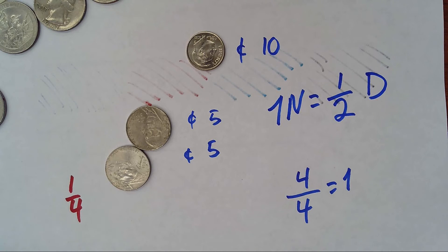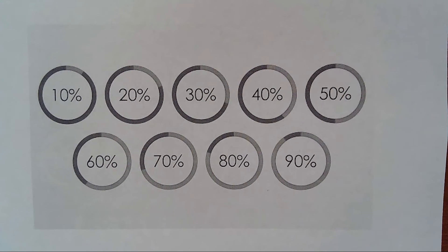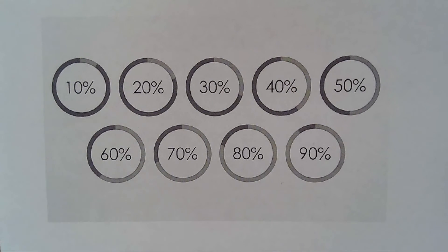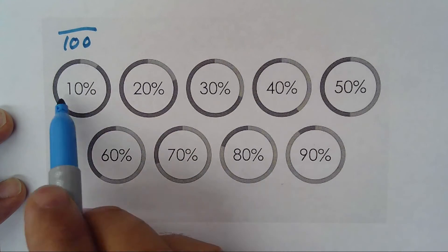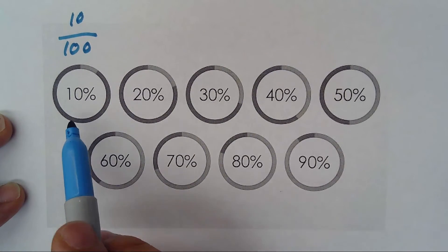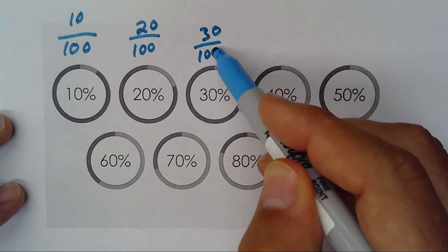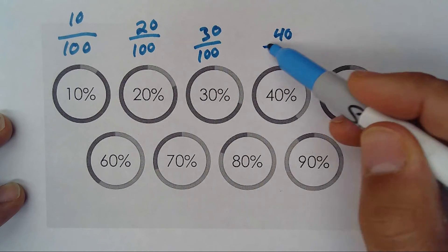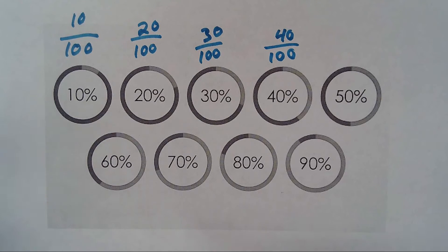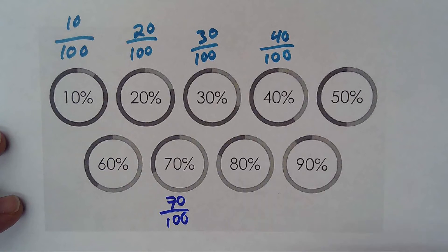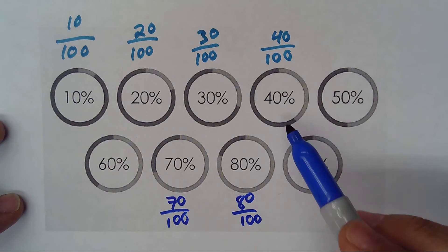I'm trying to give you different examples so you understand this topic well. Now, what about percent? Percent is a special fraction — it is always divided by 100. So 10 percent is 10 divided by 100, 20 percent is 20 divided by 100, 30 percent is 30 divided by 100, 70 percent is 70 divided by 100, 80 divided by 100, and so on.